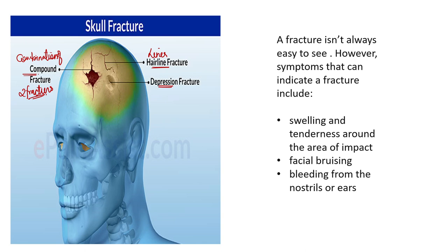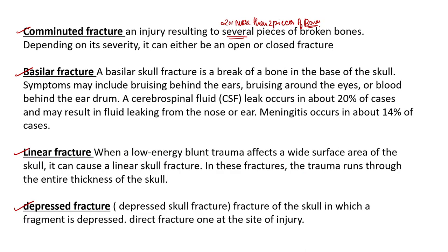Comminuted and compound fractures are different. The fractures that occur are easily visible. Symptoms can include swelling and tenderness around the area of impact, facial bruising, and bleeding from the nostrils and ears. If the impact is more severe, bleeding from the nostrils and ears begins. Comminuted fractures result in several pieces of broken bone — the bone breaks into multiple small pieces, two or more pieces. It depends on the severity of the injury and can be either open or closed fracture.